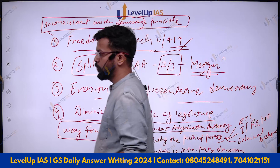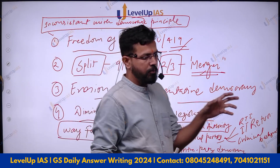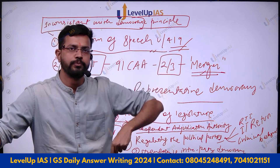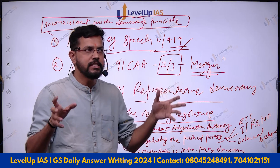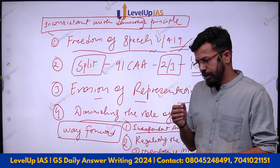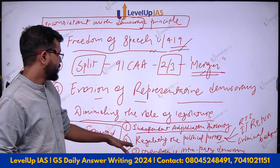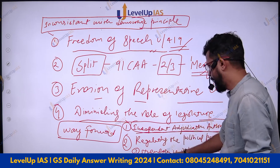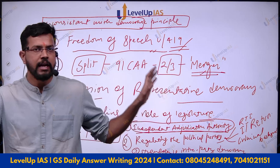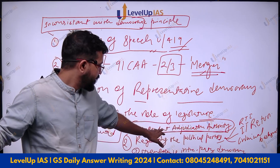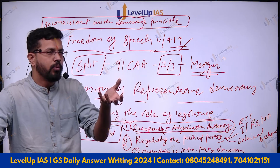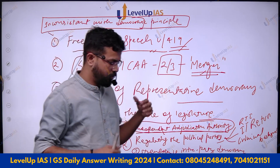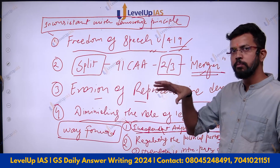Now a lot of people get confused about the difference between way forward and conclusion. Way forward is basically a list of directives — what you have to do. Whereas the conclusion is more holistic in nature; it is a summary of the topic and not narrow. For example, in conclusion you cannot write only 'there is a need for an independent adjudication authority' — that is too narrow to address the entire issue of anti-defection law.